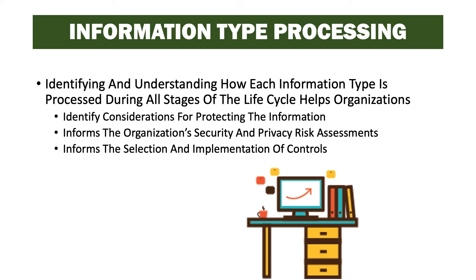We have to first define the types of information that will live on the information system, and then determine for each of those information types which stages of the information life cycle will be in use during the system's operation. For example, a system may only be used for storage of information, so that portion of the life cycle would be addressed for each of the information types.